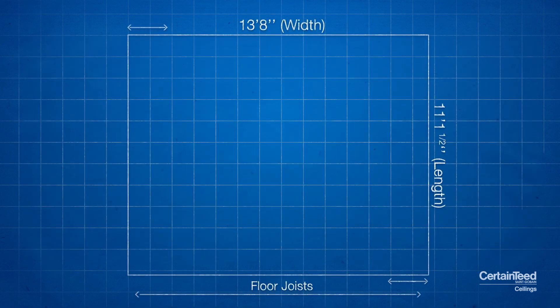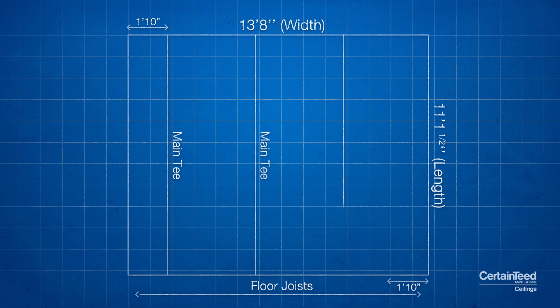Next, take your graph paper and count over and draw a line. This will represent your first main tee. Count over four more spaces and draw another line. Continue this until you have reached the other side of the room. You have now drawn all of your main tees.